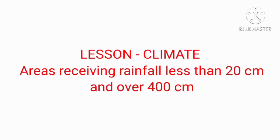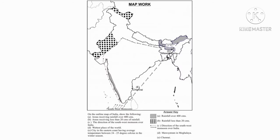Let us study the mapwork from the chapter Climate. Let us identify the areas receiving rainfall less than 20 cm. In the northwest part of India, that means in Rajasthan — Jaisalmer and Barmer. Similarly, in the north part of India, that is in Ladakh and Dras.